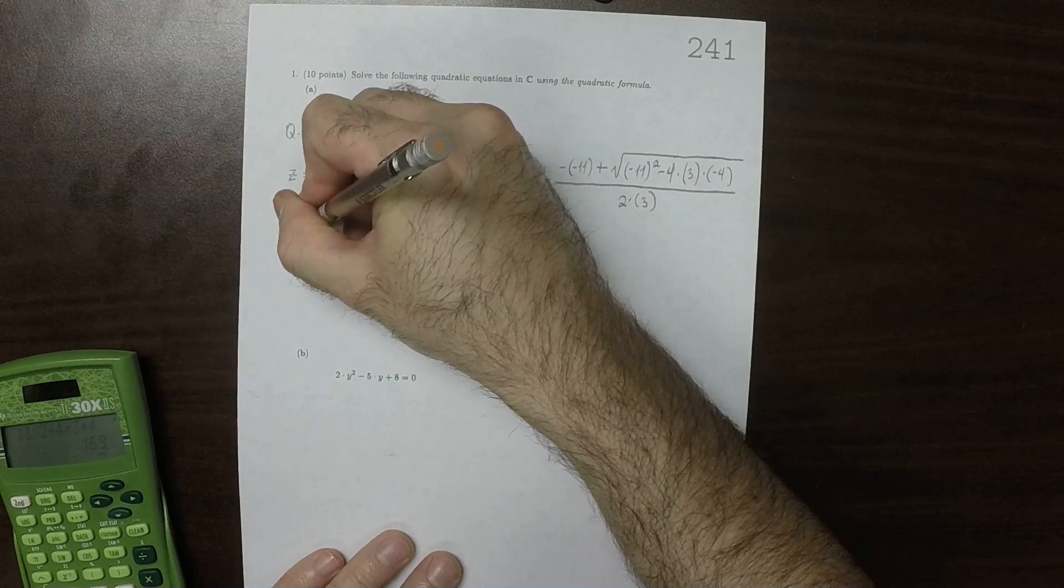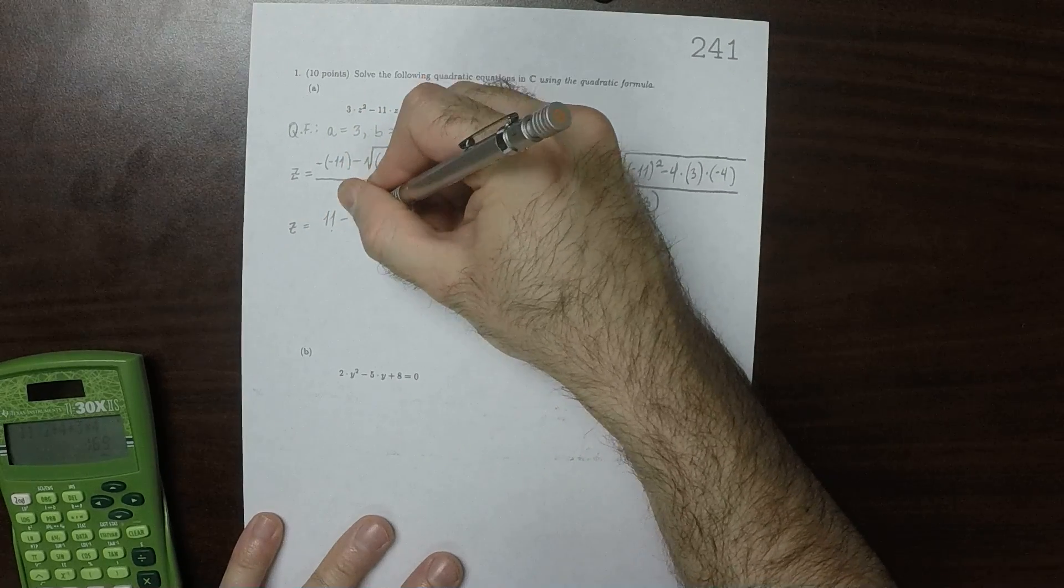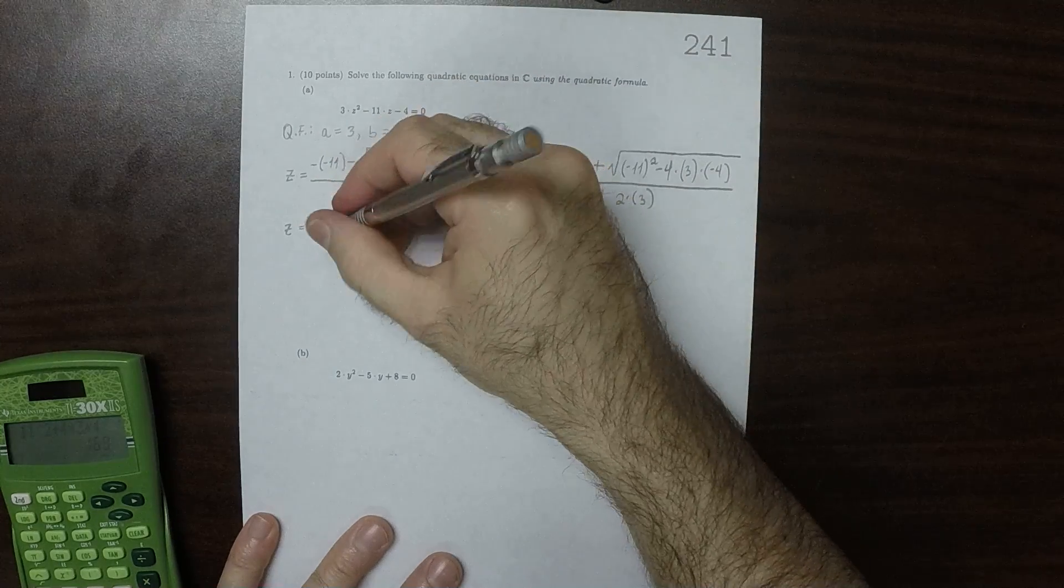So this would be z is 11 minus the square root of 169 over 6.